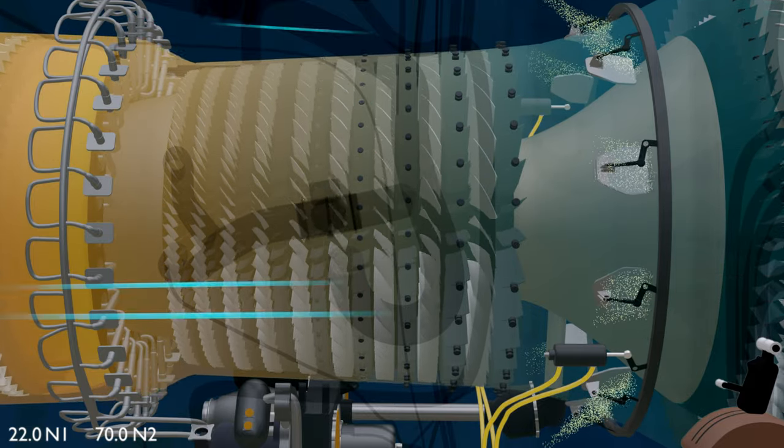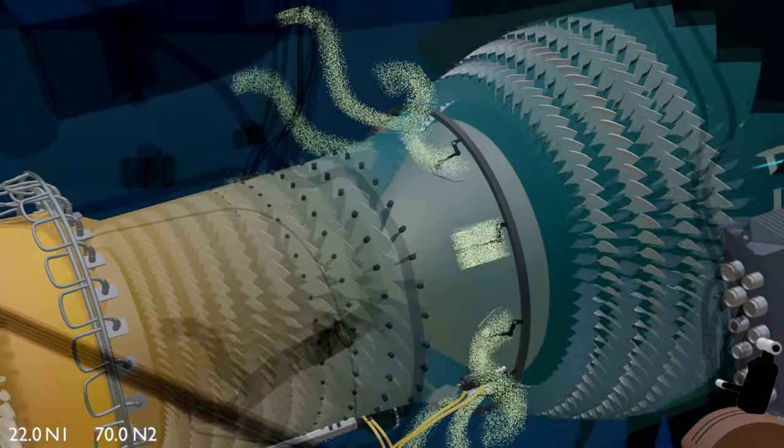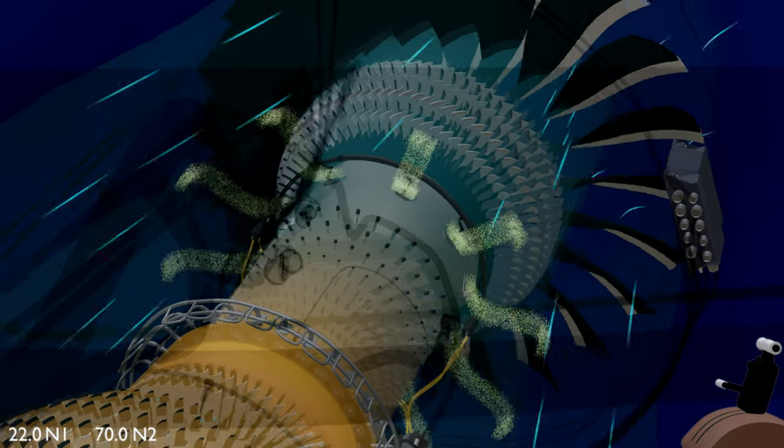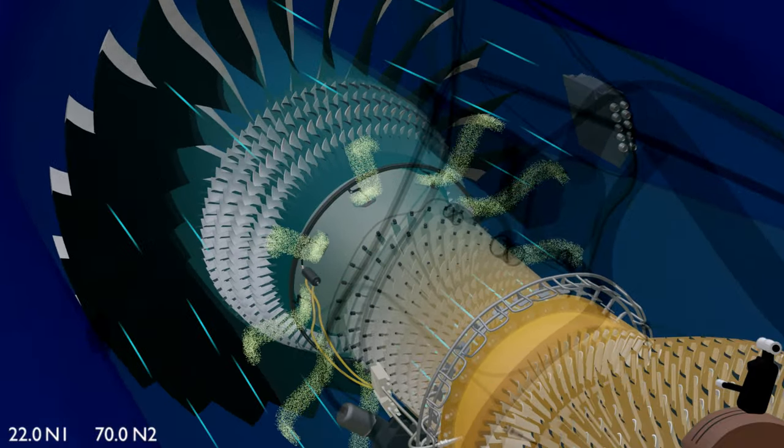The valves now open to let part of the LPC exit airflow pass through ducts and into the engine bypass airstream. This helps to match the LPC exit flow to the HPC intake, thereby reducing the load on the low-pressure compressors.